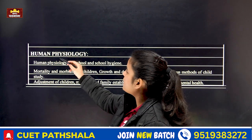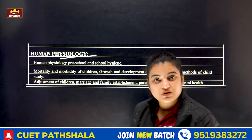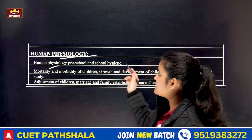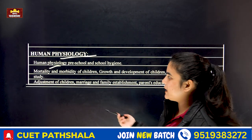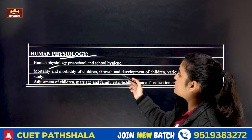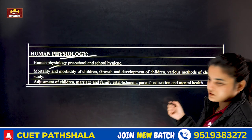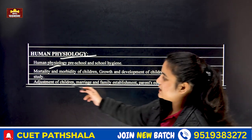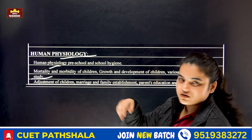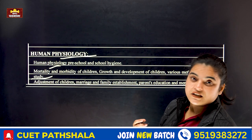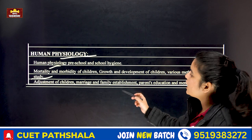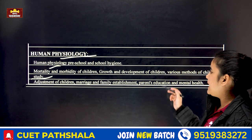The next unit is Human Physiology. We will study pre-school and school hygiene, mortality and morbidity of children, and growth and development of children. We will also cover various methods of child study and adjustment of children, marriage and family.